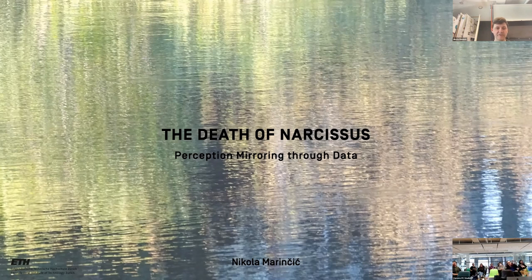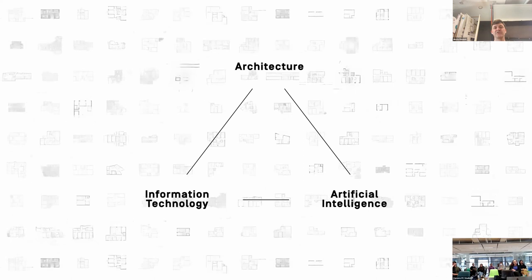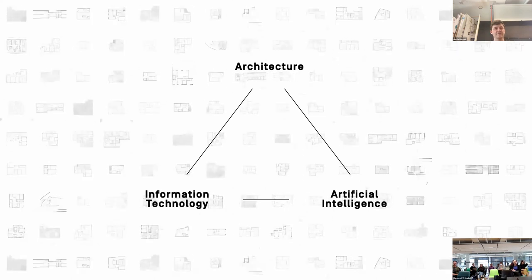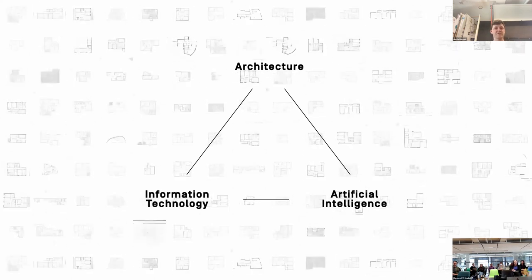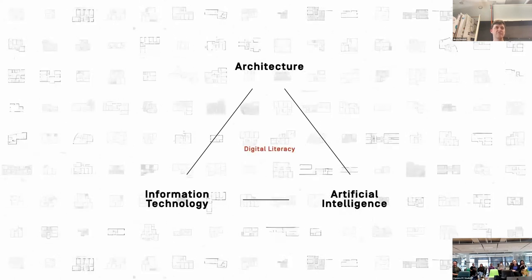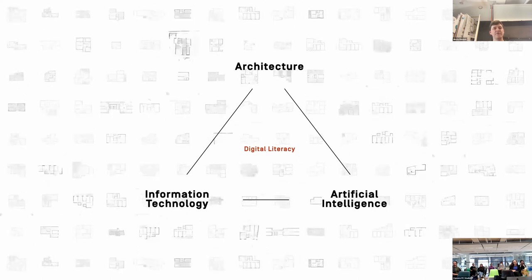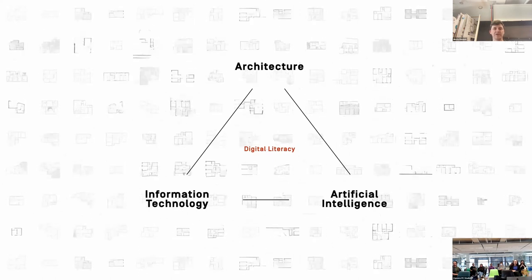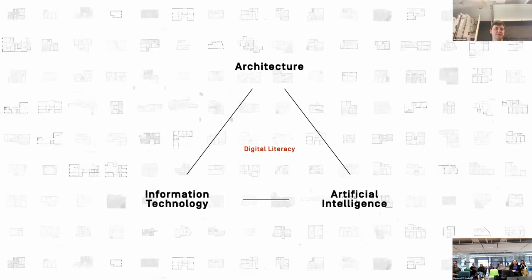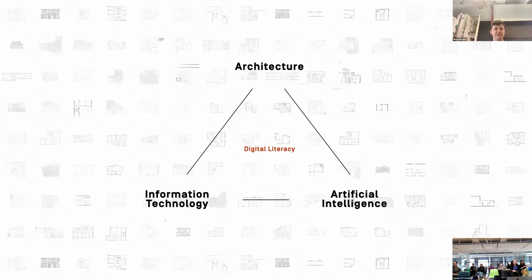I take care of around 50 students from six professorships. What I'm interested in is the relation between architecture and information technology, and my focus is on the challenges that AI poses to our field. I believe we should face these challenges through what I call digital literacy, and we should embrace the abstractness of computation.